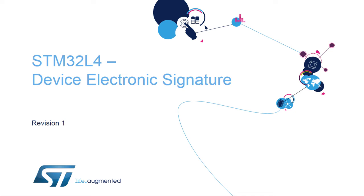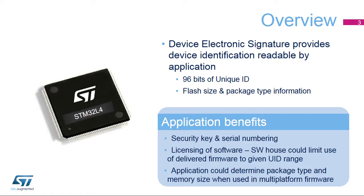Welcome to this presentation of the STM32 Device Electronic Signature, which may be used as a device identification or serial number. The Device Electronic Signature provides a set of registers containing die identification, unique device identifier or UID, and other device information such as memory size and package type.